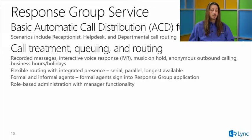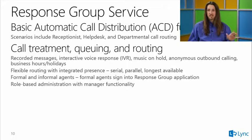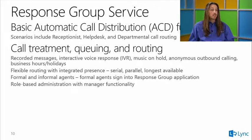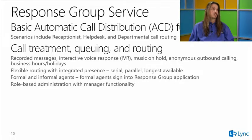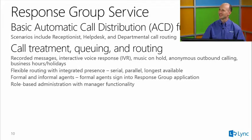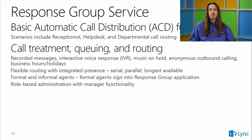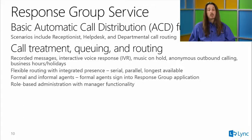Routing is very flexible. Attendant mode — sometimes called 'forget presence mode' — ignores presence and routes to everybody. You also have serial, parallel, and longest-available routing, which routes to the person who has done the least amount of work. All routing modes except Attendant are presence-based, so users set to Away won't receive calls.